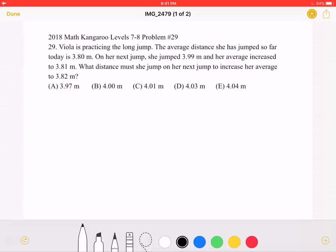Viola is practicing the long jump. The average distance she has jumped so far today is 3.8 meters. On her next jump, she jumped 3.99 meters, and her average increased to 3.81 meters.